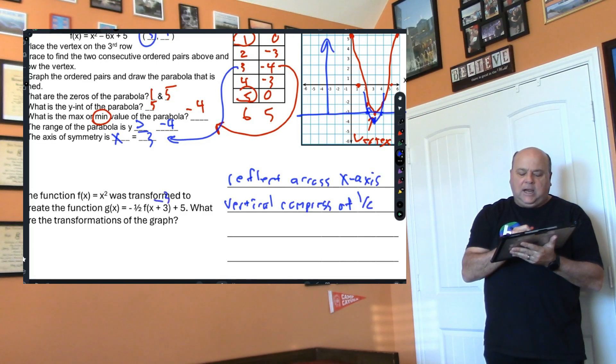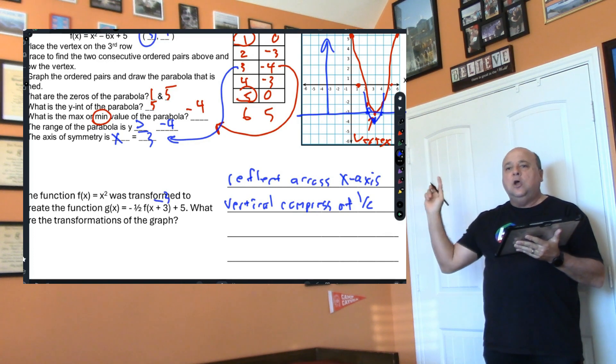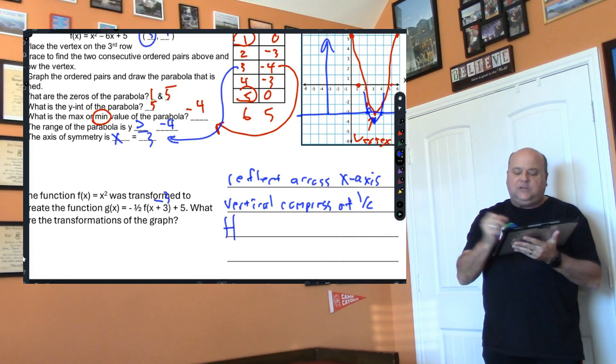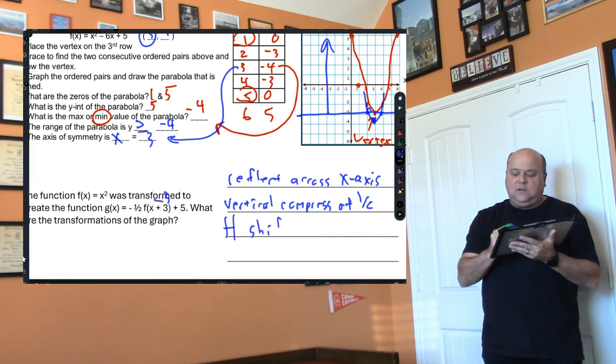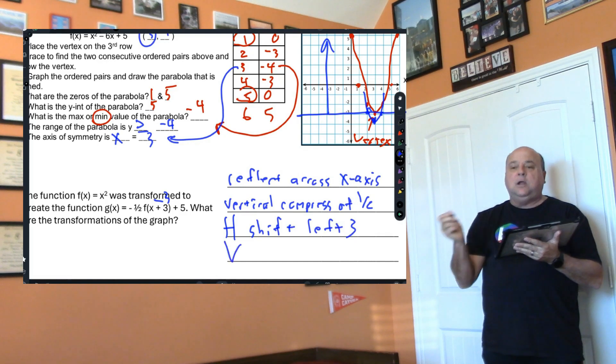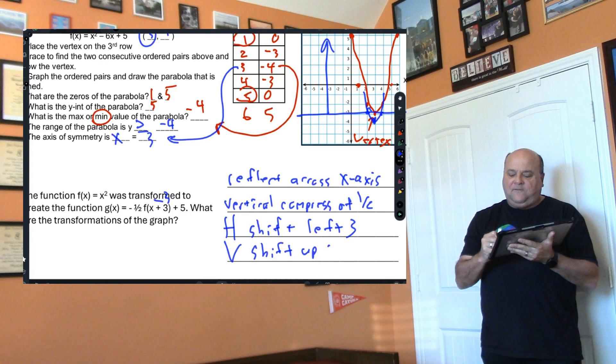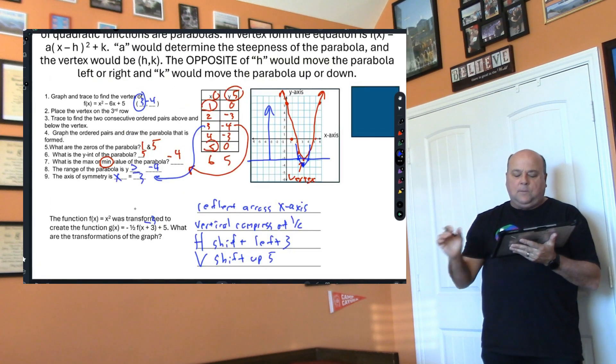This plus 3—always write the opposite of the number in the parentheses. This is a horizontal shift, and it's not right 3, it's left 3 because it's opposite. Then lastly, the 5 is a vertical shift up 5. That's the transformations. Make sure you know those transformations for tomorrow.